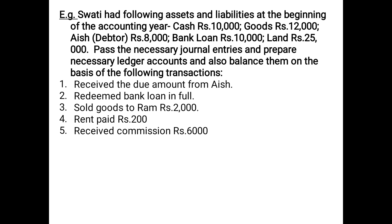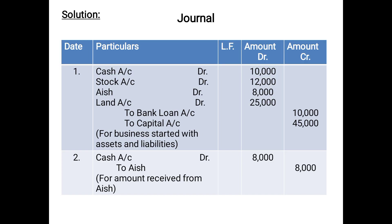Now if you see the opening entry — we will debit all the assets and credit all the liabilities. So the opening entry is: Cash Account debited 10,000; Stock Account debited 12,000; Ash debited 8,000; Land Account debited 25,000; To Bank Loan Account 10,000.